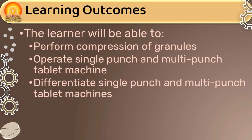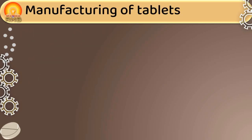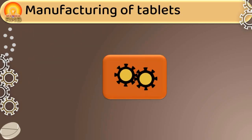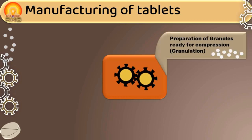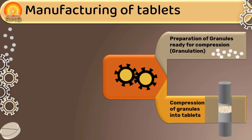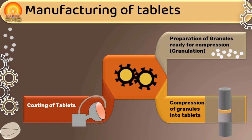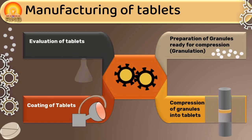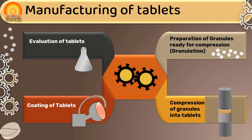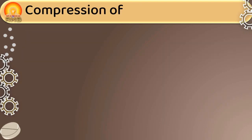In previous presentations, we discussed that the manufacturing process of compressed tablets involves various steps: preparation of granules ready for compression, and compression of granules into tablets. In this presentation, we are going to discuss the second step, i.e. compression of granules into tablets.